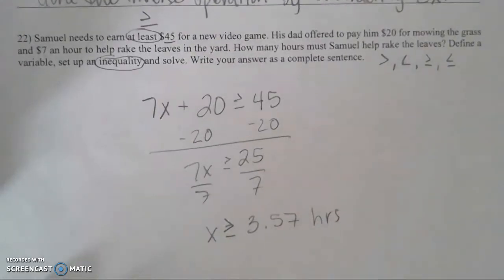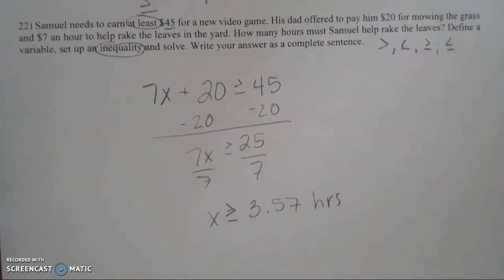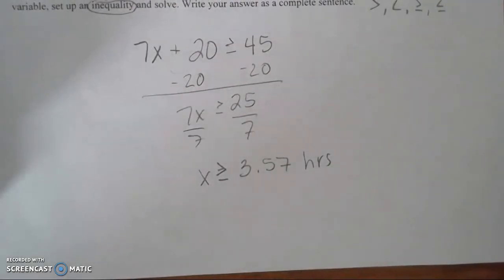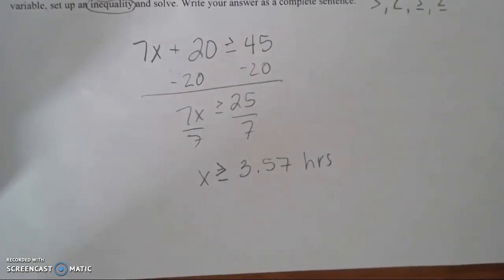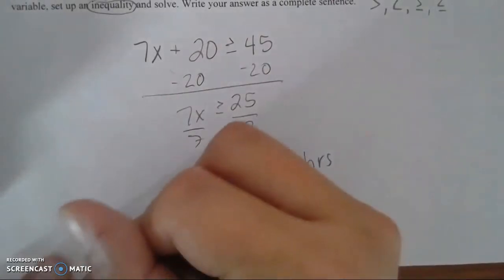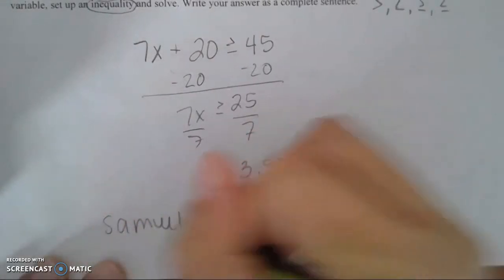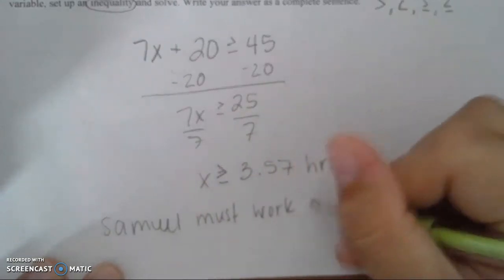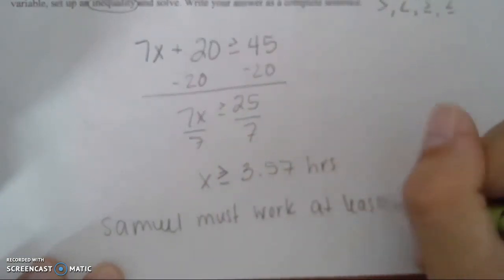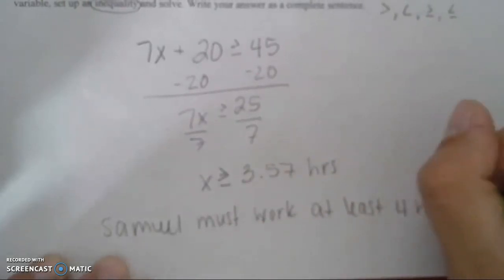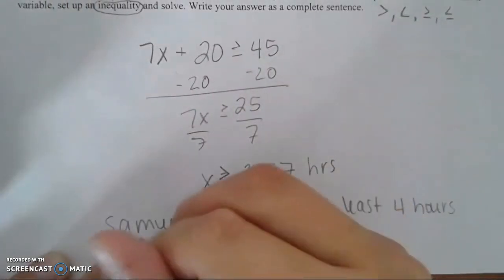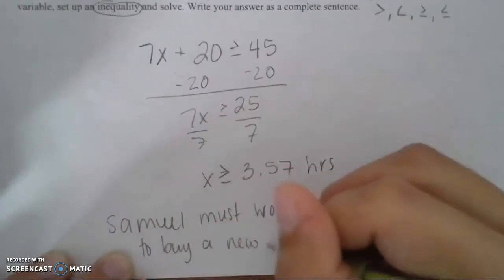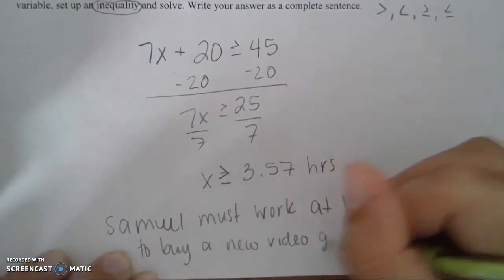When you get a decimal answer, you always want to round. Since 3.57 rounds up to 4, Samuel must work at least 4 hours to buy the new video game.